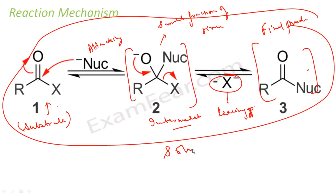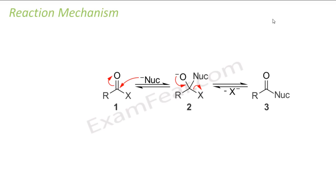The whole thing happens in a solvent. This is a typical reaction mechanism for organic chemistry. We have learned many new words: substrate, attacking reagent, intermediate, leaving group, solvent, and final product. So let's try to understand the reaction mechanism in detail using the same reaction.